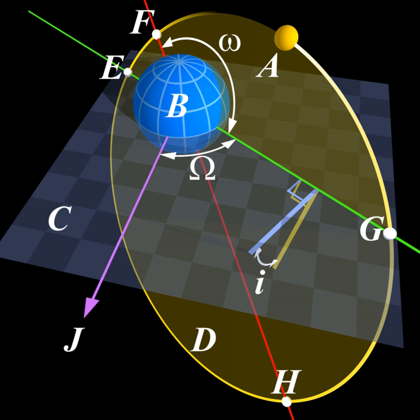One sees that the Hohmann transfer is always more efficient if the ratio of radii R_2 over R_1 is smaller than 11.94. On the other hand, if the radius of the final orbit is more than 15.58 times larger than the radius of the initial orbit, then any bi-elliptic transfer, regardless of its apoapsis radius as long as it's larger than the radius of the final orbit, requires less ΔV than a Hohmann transfer.